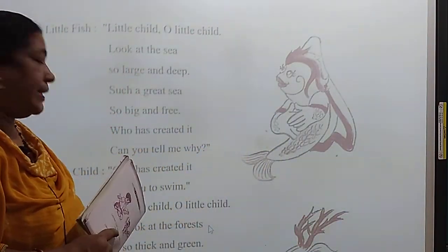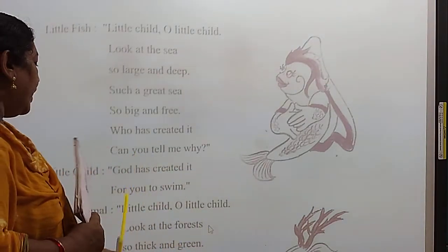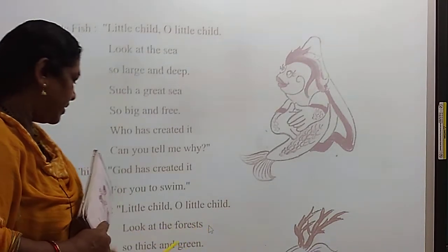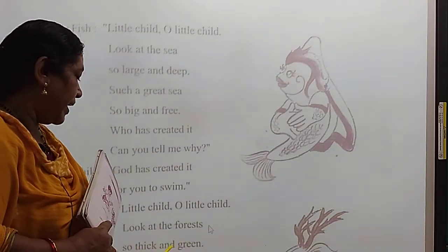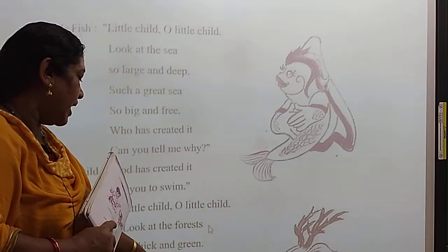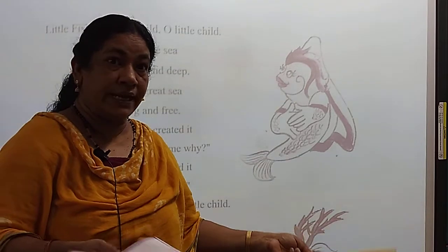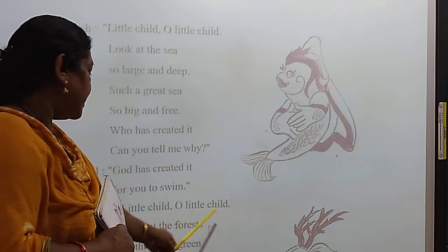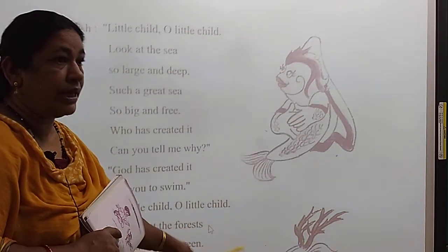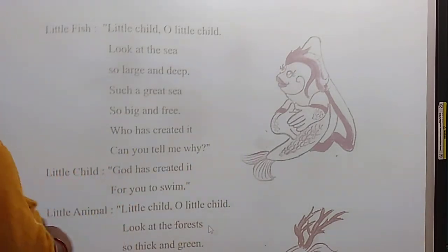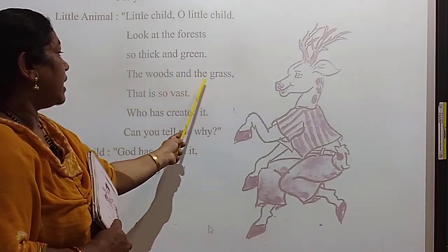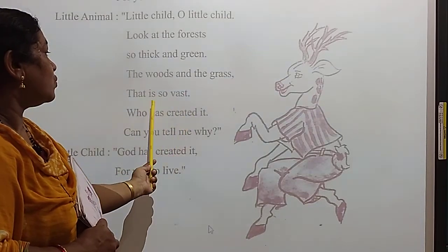Then next, little animal. See the picture. Little child, little child, look at the forest, F-O-R-E-S-T, forest, so thick and green, T-H-I-C-K and G-R-E-E-N. The woods and the grass, that is so vast, V-A-S-T. Who has created it? Can you tell me why?